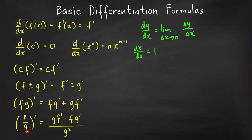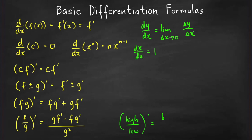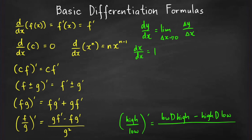Similarly, the derivative of a quotient is not equal to the quotient of the derivatives. The quotient rule states: denominator times the derivative of the numerator minus numerator times the derivative of the denominator, all over the denominator squared. A helpful mnemonic is 'low d high minus high d low over low low' — low times derivative of high, minus high times derivative of low, over low squared.